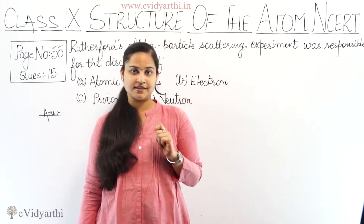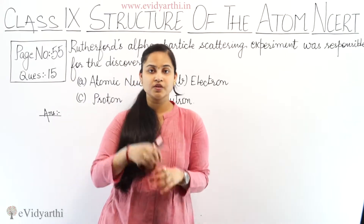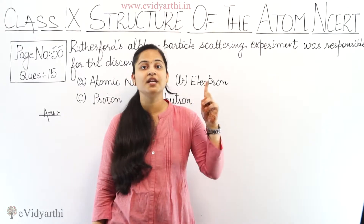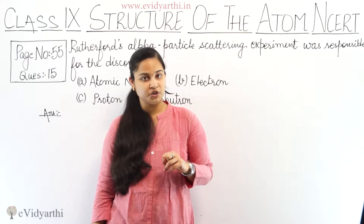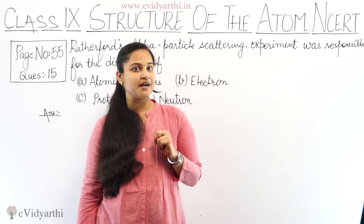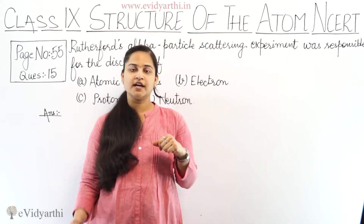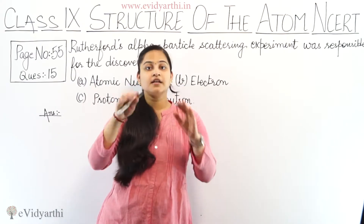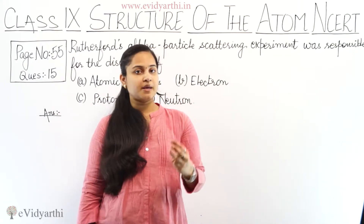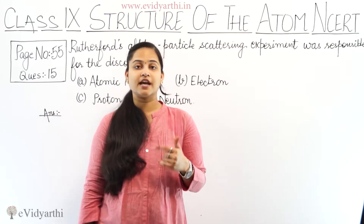The positively charged center is called the nucleus, and nearly all the mass of the atom resides in that nucleus. The second observation was that the electron revolves around a circular path. The third observation was that the nucleus is very, very small as compared to the size of the atom.